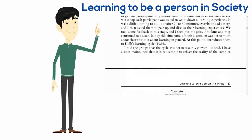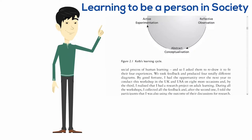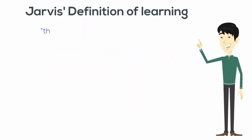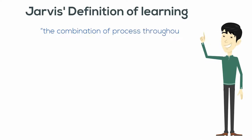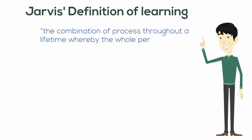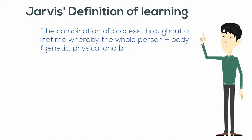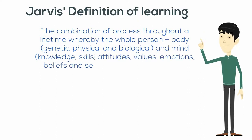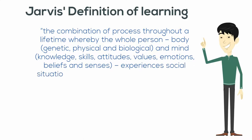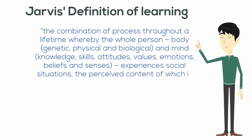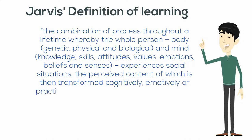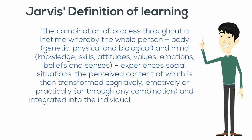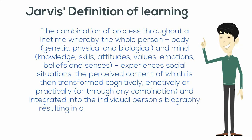Finding out what learning is has always been a complicated endeavor, and so is Jarvis's definition of learning. He describes human learning as the combination of processes throughout a lifetime whereby the whole person — body, genetic, physical, biological, and mind, knowledge, skills, attitudes, values, emotions, beliefs and senses — experiences social situations, the perceived content of which is then transformed cognitively, emotively, or practically, or through any combination.